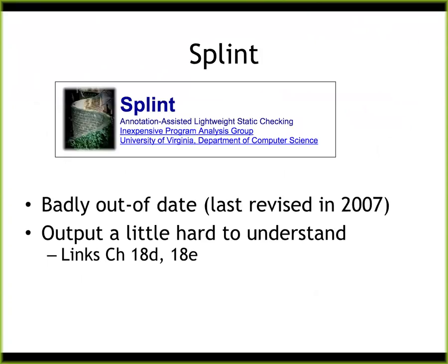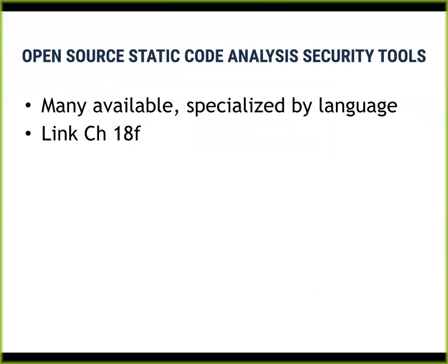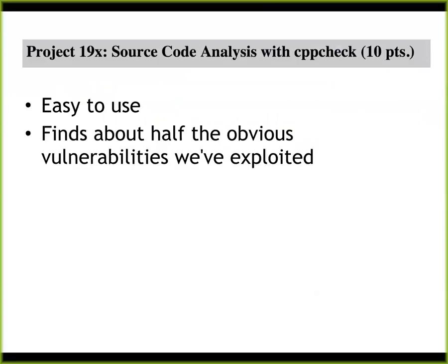There are automated tools as well. Splint is one of the older ones — it appears to have been abandoned more than 10 years ago so I didn't make a project based on it. There are many others specialized to each language. I wrote a project using CppCheck, which is easy to use but very ineffective. It reminds me of online vulnerability scanners for SQL injection — in practice they only find about half of what they're designed to find.